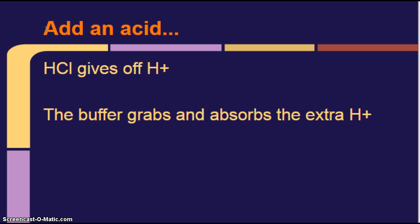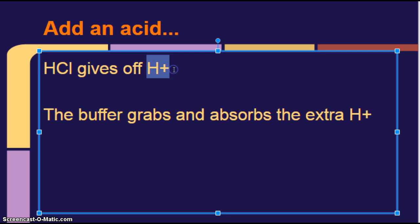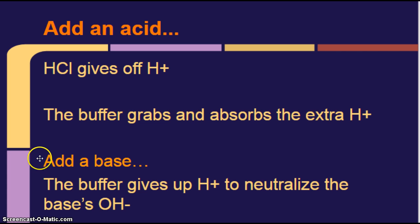So let's say we add an acid to a solution. So we put some HCl into a solution, and it gives off the H+. So remember, the H in front is a good indication that it's an acid. And then we have this H+ floating around. Well, the buffer grabs and absorbs the extra H+, therefore keeping the pH close to what it was at the beginning.